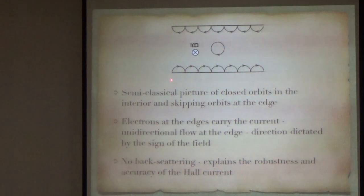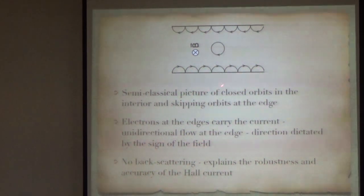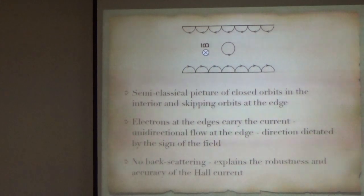It is ultimately the electrons at the edges which carry the current, and the direction of the electron flow at the edges is fixed by the sign of the magnetic field. If you reverse the sign of the magnetic field, that will go in the opposite direction. You can roughly understand why it is very well quantized and there is no backscattering because the left movers and the right movers are spatially separated.